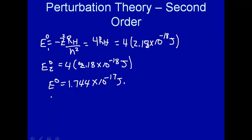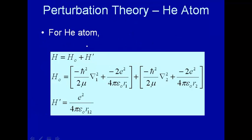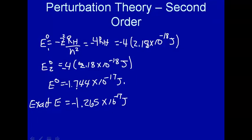It would be interesting to compare this with the exact experimentally measured value. The exact energy of the electrons in a helium atom experimentally is −1.265×10⁻¹⁷ J. (I keep forgetting the minus sign — those are pesky.) So it's the same order of magnitude, but this is considerably off from the actual experimental measurement. That means the perturbation Hamiltonian is actually not small compared to H0 — it's about 30% or so. That's large.